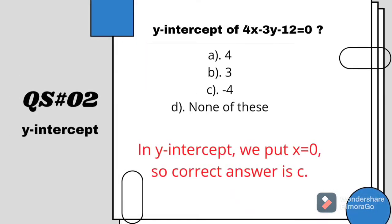In the next question or in the similar question you can say the y-intercept of the same equation. As we know that in y-intercept we always put x equals to 0. So when we put x equals to 0 the correct answer is 3y minus 12 equals 0 and y is equal to minus 4.